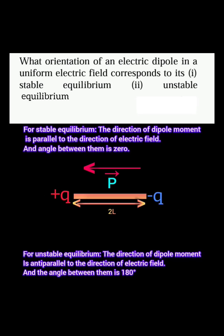What orientation of an electric dipole in a uniform electric field corresponds to its stable equilibrium, and unstable equilibrium?